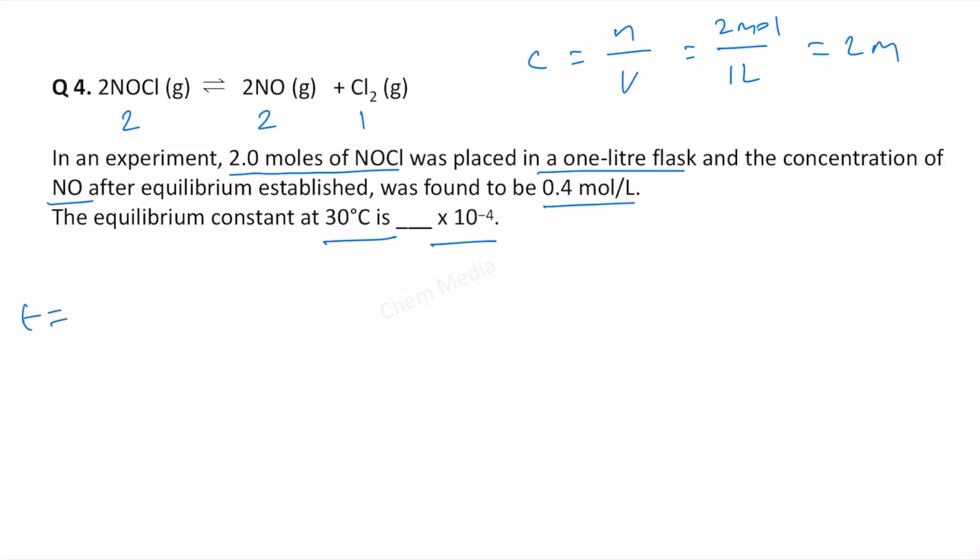Therefore at t equal to 0, this is 2 molar, NO will be 0, Cl2 also will be 0. The change that is happening here is minus 2x, here it is plus 2x and here it is plus x. So therefore at t equal to equilibrium, this will be 2 minus 2x, this will be 2x and this will be x.